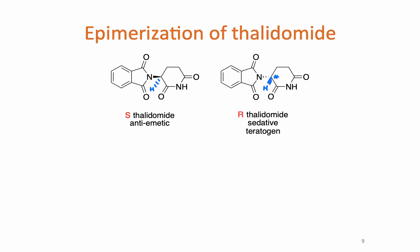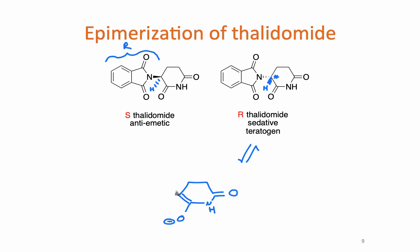Thalidomide has a stereocenter in the molecule. The R isomer is a teratogen and a sedative, whereas the S isomer is the anti-emetic. One might think — why not just give a pure S compound and avoid the teratogen? The problem is that that stereocenter is located right next to a carbonyl, so enol formation and inversion of stereochemistry is possible. In the body, with lots of protons around and catalytic acid, that epimerization would be fairly easy. So even if somebody were given a pure S, it could easily interconvert in vivo into the R. It is not possible to give thalidomide, even as pure S, to pregnant women.